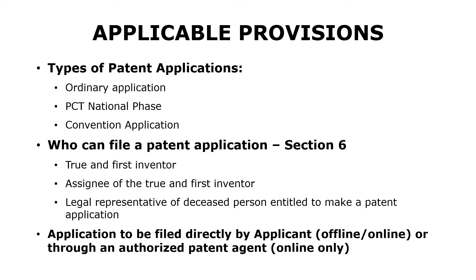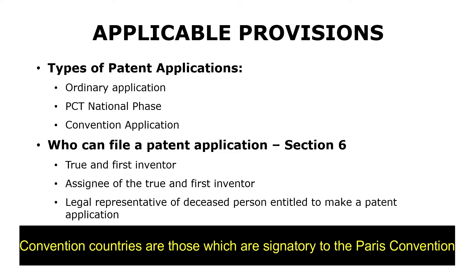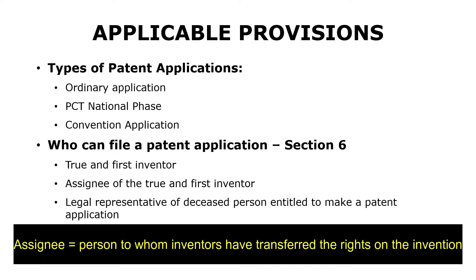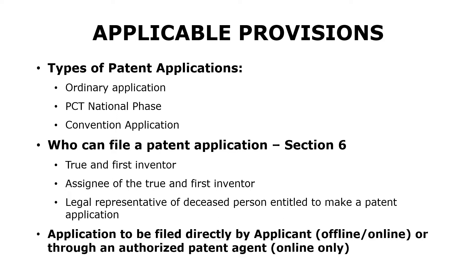That application would be called a PCT national phase application. Then comes the convention application, wherein applications are filed under the Paris Convention, wherein you take priority from an earlier filed application in any of the convention countries. Section 6 provides who is entitled to file a patent application in India. It could be filed by either the true and first inventor, or an assignee of the true and first inventor. In addition, a patent application could also be filed by a legal representative of a deceased person who was entitled to make a patent application.